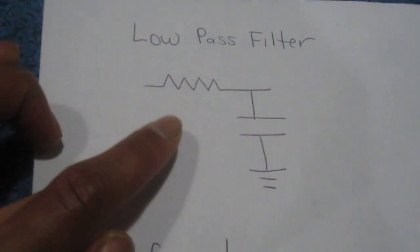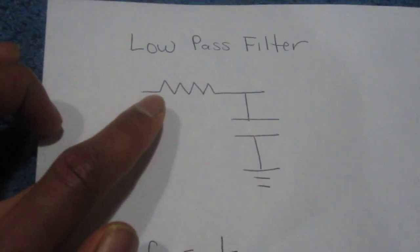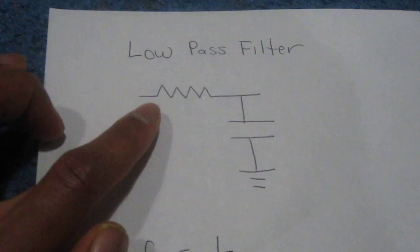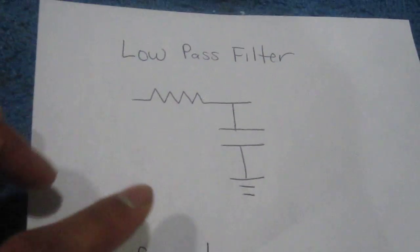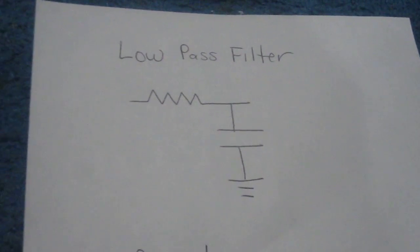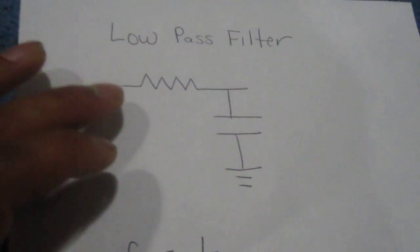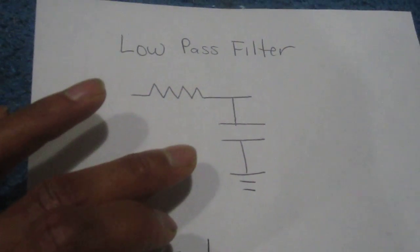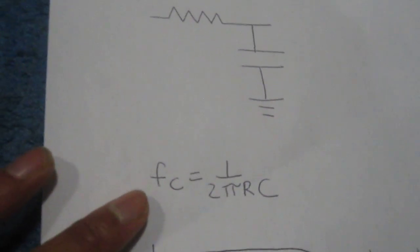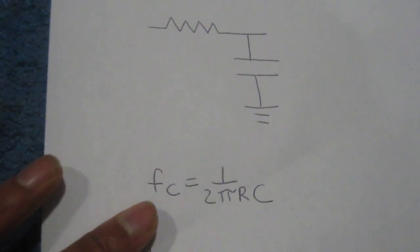So just real quick, this is the diagram of the RC low-pass filter. It's composed of a single resistor and capacitor in this setup, and for the circuit I'm going to use a 1k ohm resistor and a 10 nanofarad capacitor.